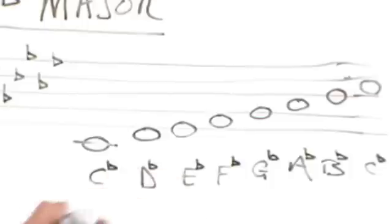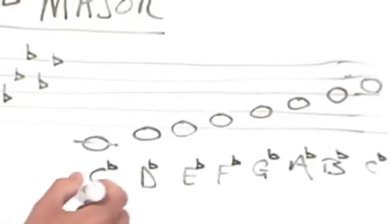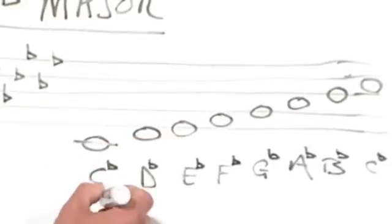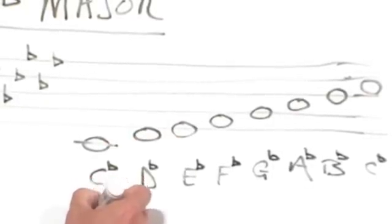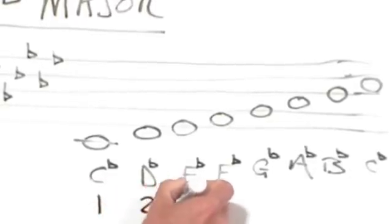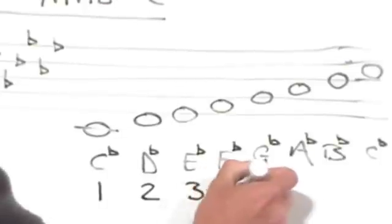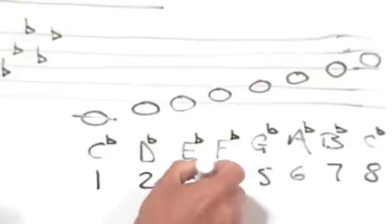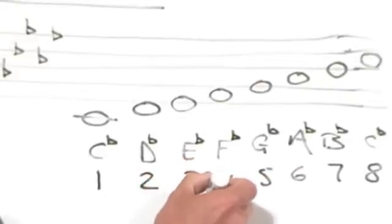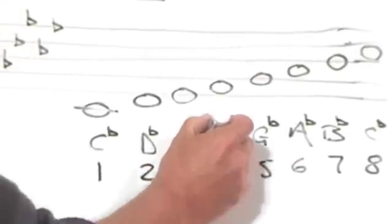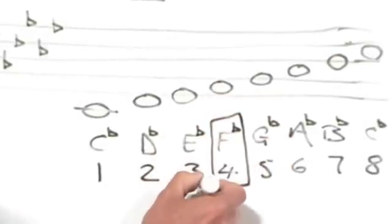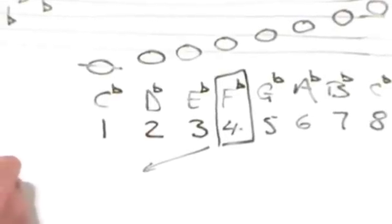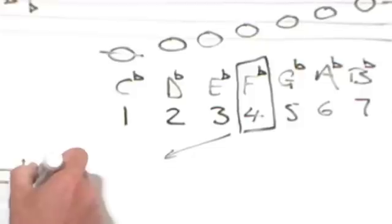All the notes have a flat next to them, seven flats, and you could be forgiven for thinking that's as far as you want to go. But let's see what happens if we continue the circle of fourths round. Put our numbers in. So remember the rule for the circle of fourths is we take the fourth note, bring that down and that becomes the next key. So the next key is going to be F flat major.